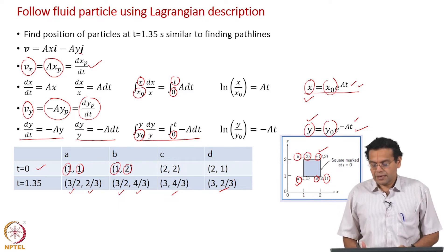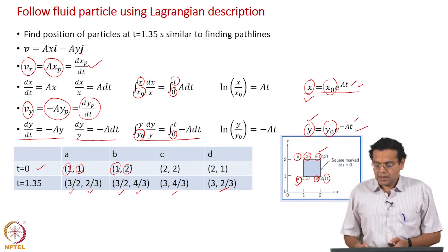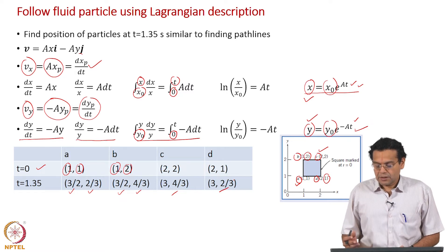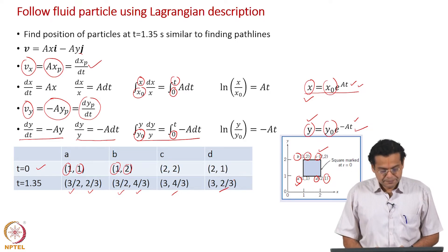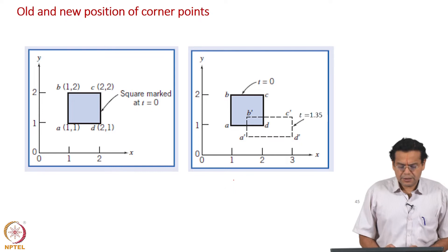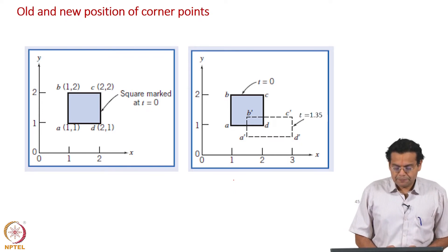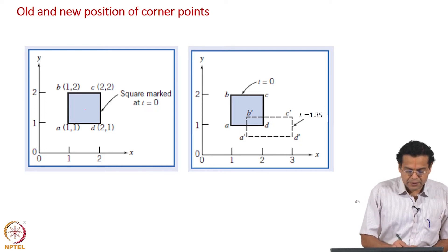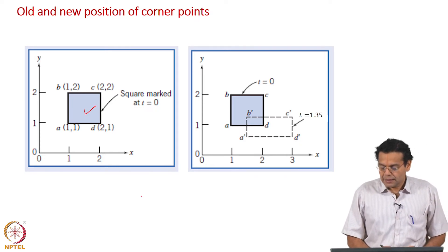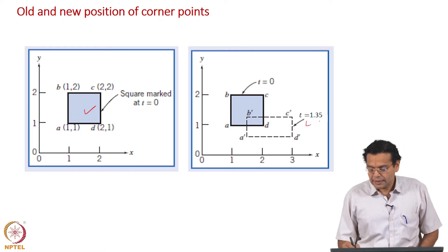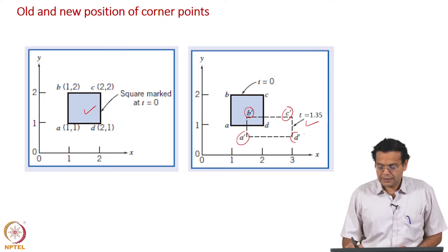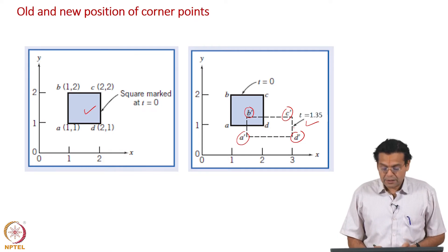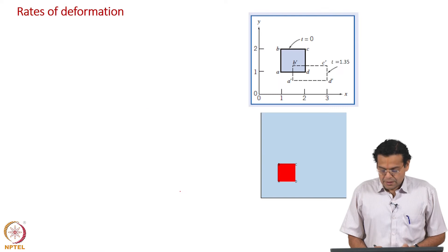What we have actually calculated is only the path line, but now we analyze what happens to this region and what is the implication of the velocity field on this particular region. Let us show the old and new positions of the corner points. The square region marked at t = 0 has become a rectangle at t = 1.35 seconds, with the new corner positions A', B', C', and D'.